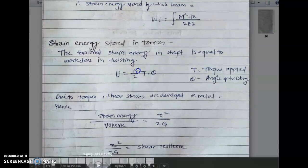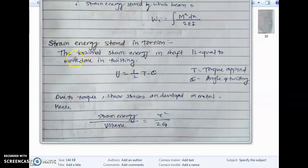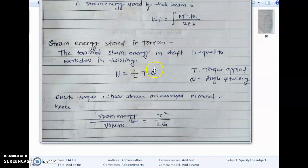Now we see the next point: strain energy stored in torsion. The torsional strain energy in a shaft is equal to the work done in twisting. It equals U equals one-half T into theta, where T is the torque and theta is the angle of twisting. Due to torque, shear stresses are developed in the material, so the strain energy per unit volume is tau squared upon 2G.